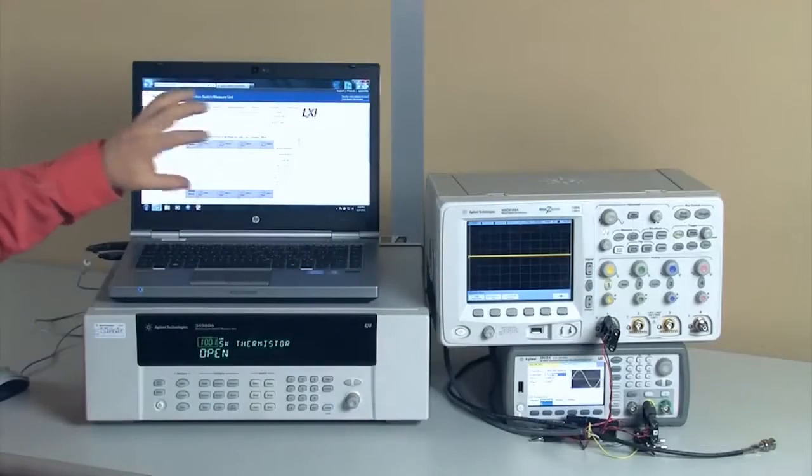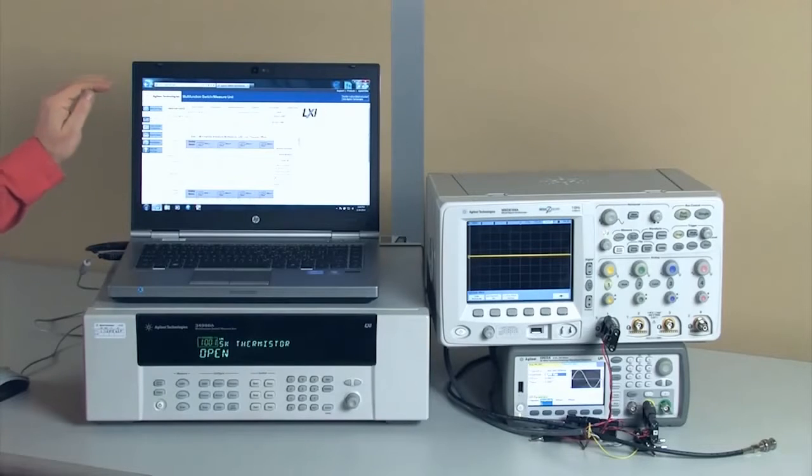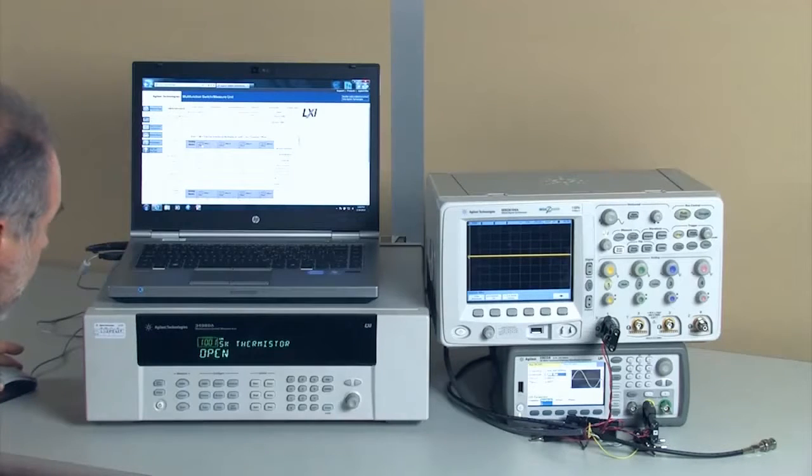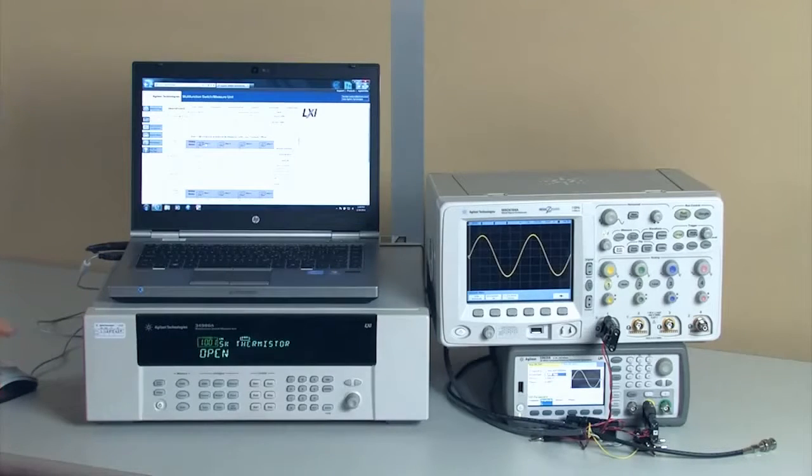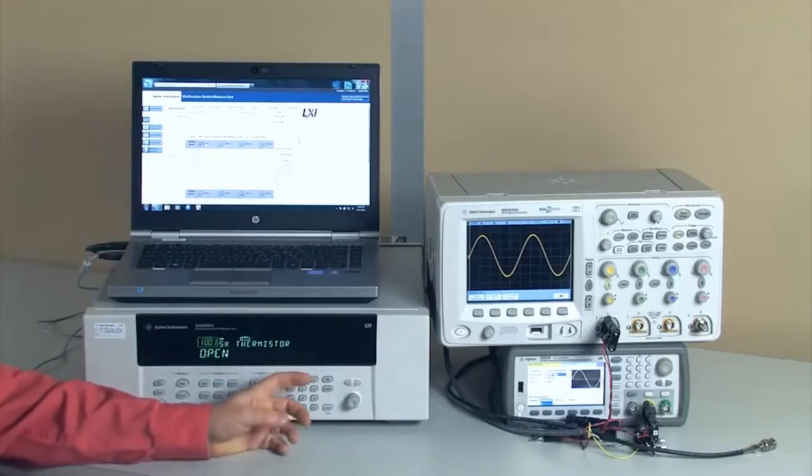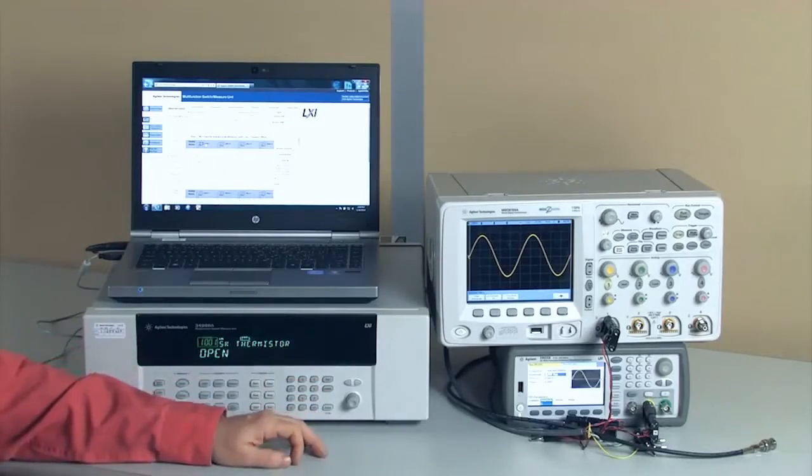But you can see on the scope there's no signal there yet because I haven't closed this analog bus 1 switch. So right now I'm going to close analog bus 1, and you can see on the oscilloscope that a sine wave has now appeared.